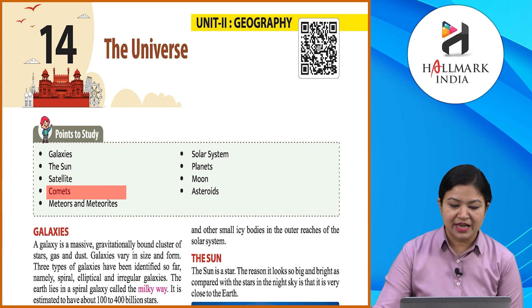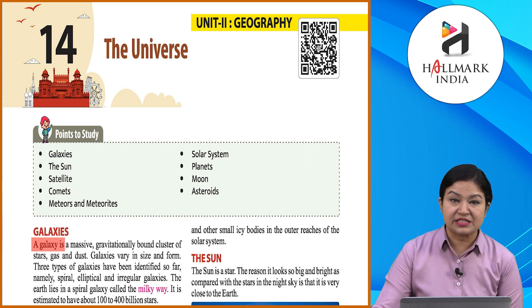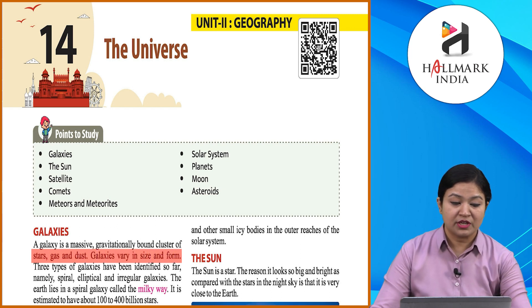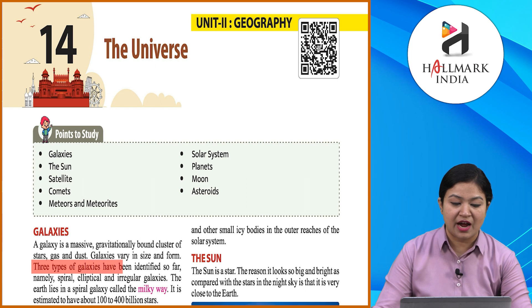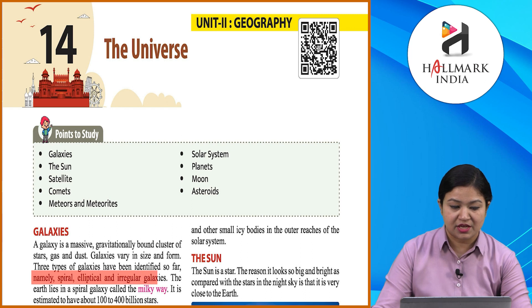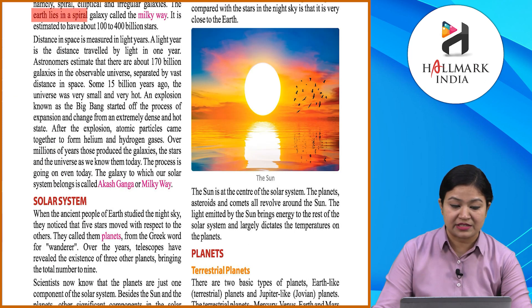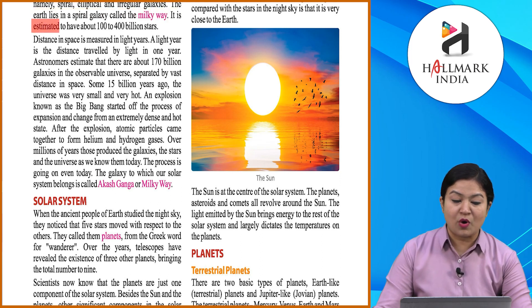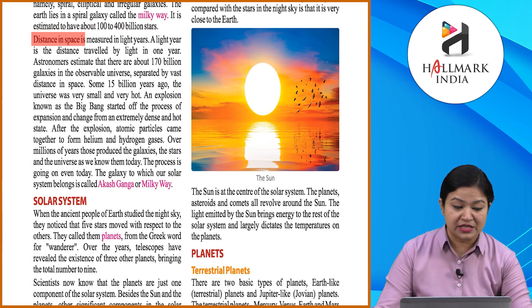A galaxy is a massive, gravitationally bound cluster of stars, gas, and dust. Galaxies vary in size and form. Three types of galaxies have been identified so far: spiral, elliptical, and irregular galaxies. The Earth lies in a spiral galaxy called the Milky Way galaxy, estimated to have about 100 to 400 million stars. Distance in space is measured in light years.